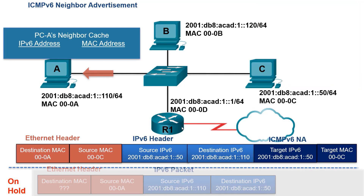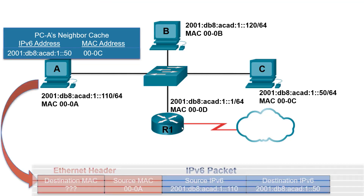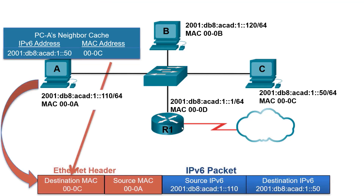Host A receives the Ethernet frame, examines the IPv6 address and the MAC address in the ICMPv6 header, and adds it to its Neighbor Cache. Host A can now take the IPv6 packet off hold, updates the destination MAC address with the address associated with the destination IPv6 address, and forwards the frame and IPv6 packet to Host C. Note that if the destination IPv6 address was on a different network, this same process would occur to discover the MAC address of the default gateway, which would map to R1's IPv6 link-local address on this LAN.